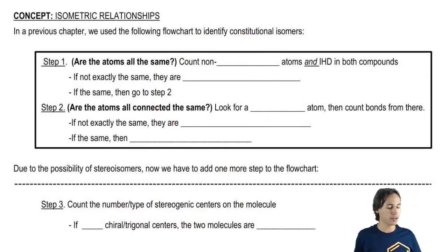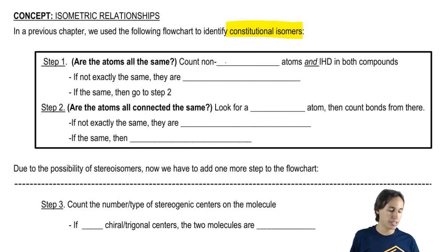So maybe you guys remember this flowchart. I made it when we were talking about constitutional isomers. Remember that we talked about how the very first step is to verify that all the atoms are the same. So we would count the non-hydrogen atoms and the IHD in both compounds.